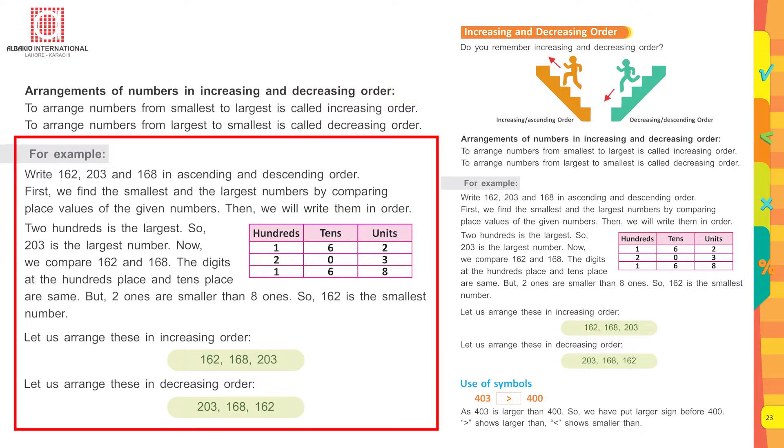For example, write 162, 203, and 168 in ascending and descending order. First we find the smallest and the largest number by comparing place values of the given numbers. Then we will write them in order. 203 is the largest number. Now we compare 162 and 168. The digits at the hundreds place and tens place are the same, but two ones is smaller than eight ones. So 162 is the smallest number.